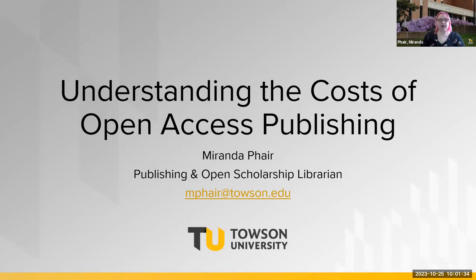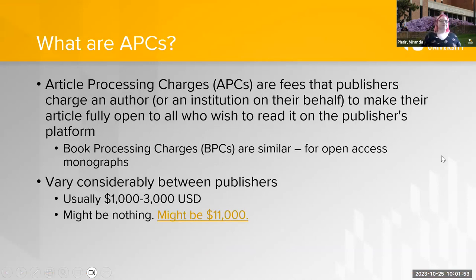I'm going to talk a bit first about the background of this topic and then get into more practical questions — like how can I find out how much I have to pay, or whether I have to pay, and how do I get around it. I'll spend a lot of time today talking about APCs, which stands for article processing charges. Basically they're fees that publishers will charge an author — or maybe an institution on their behalf — to make their article fully open to all who wish to read it on the publisher's platform.